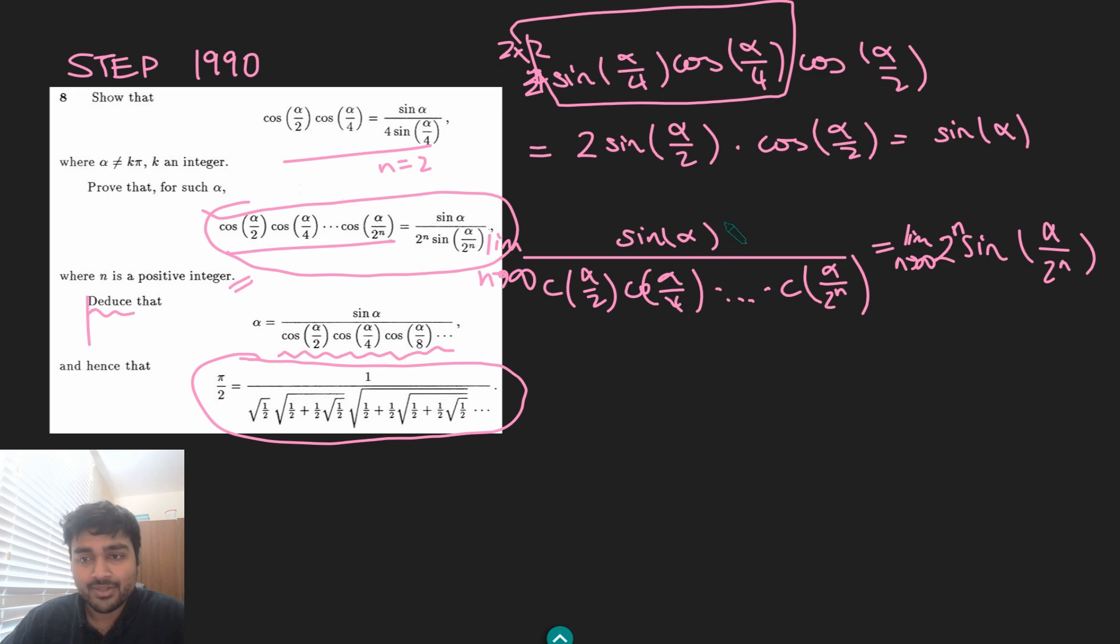So this term here on the left just becomes the right hand side of this equation. So that's great. Now we just need to show that this thing here equals alpha. Well, let's have a look at this. We've got the limit as n goes to infinity of 2 to the n times sine of alpha over 2 to the n. But as n goes to infinity, both 2 to the n and 2 to the n, they both approach infinity as well at the same rate. So in fact, I can just make this the limit as n goes to infinity of n times sine of alpha over n, like so.